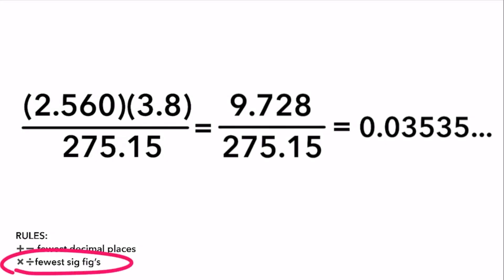I have to round my final answer to the number of sig figs as the least precise term in my calculation, which is 3.8 since it only has 2 sig figs. To round my answer, I look at the second significant figure, which is 5.